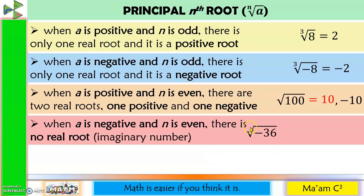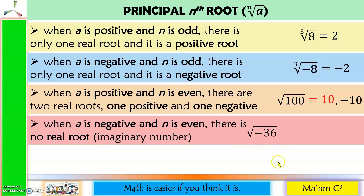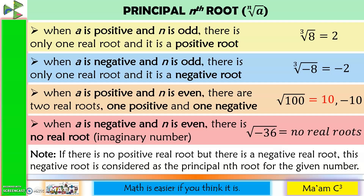Example: there is nothing written in the index, so it is understood that the index is 2, and 2 is an even number. But this time our radicand is a negative number. If this is the case, there are no real roots. Take note: if there is no positive real root but there is a negative real root, that negative root is considered to be the principal root of the given number.